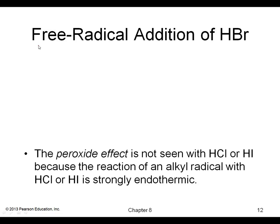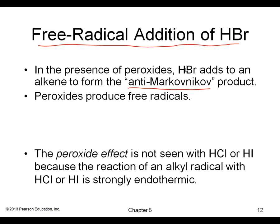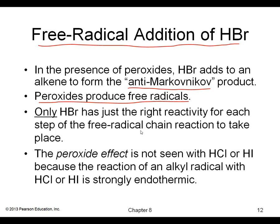Now we'll switch gears and look at the free radical addition of HBr in the presence of peroxides. HBr adds to an alkene to form the anti-Markovnikov product — sometimes called the non-Markovnikov product — where the bromine ends up not on the most substituted carbon but on the least substituted carbon. This is because it is a free radical reaction.